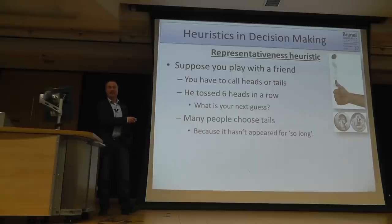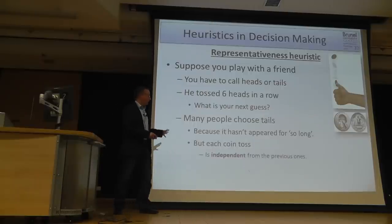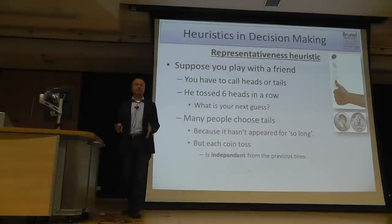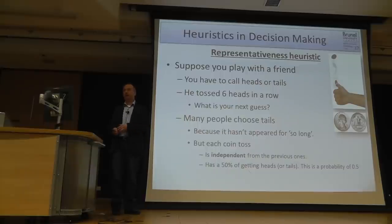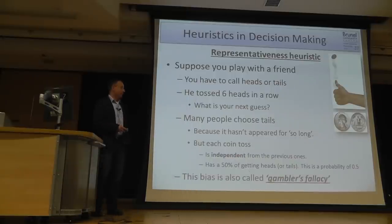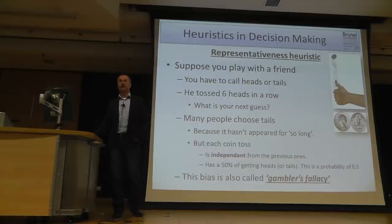However, from a statistics point of view — assuming it's a fair coin — each coin toss is absolutely independent from the previous one. On each individual coin toss, you have a probability of 50% heads or 50% tails — always 50%, no matter whether you had a hundred heads before or not. This bias is called gambler's fallacy, because gamblers often fall for it: 'It didn't come for so long, so I'll put all my money on it because it must come now.'